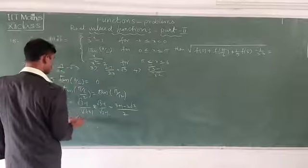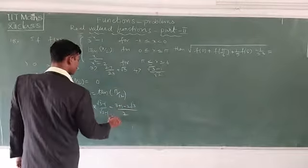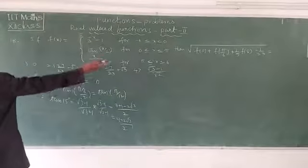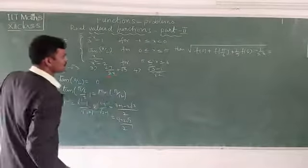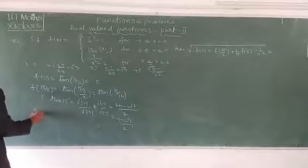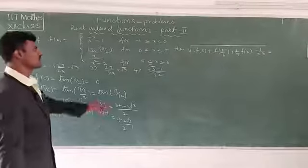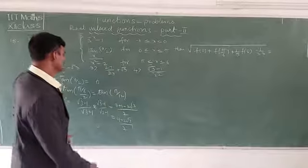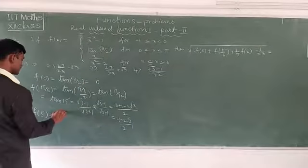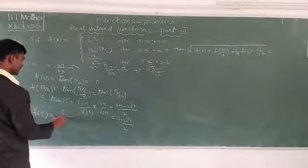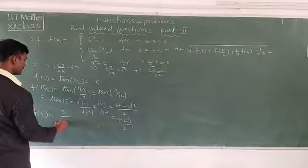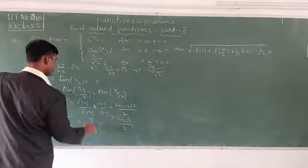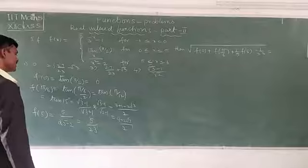Simplifying: (4 - 2√3)/2. Now find f(5). Since 5 lies between π and 6, we use x/(x² - 2). Substituting x = 5: f(5) = 5/(25 - 2) = π/23.